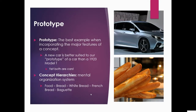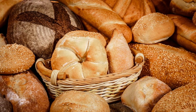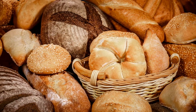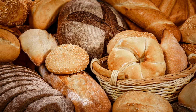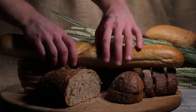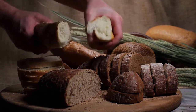A prototype is the best example when incorporating the major features of a concept. A new car is better suited to our prototype of a car than a 1923 Model T — they're both cars. We also have concept hierarchies, our mental organization system. For example, the overarching topic of food can break down into bread and bread types, then white bread, then French bread, and all the way down to a baguette. We can do that with numerous different topics.